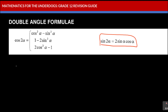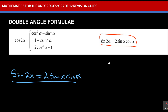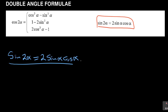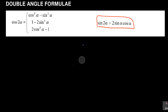The first one that is simpler is: sin 2α is equal to 2 sin α cos α. You just have to remind yourself of this, but I'll show you how they can bring it in an example in a hidden way.